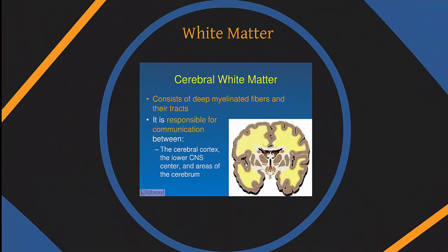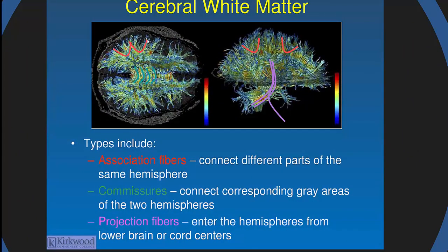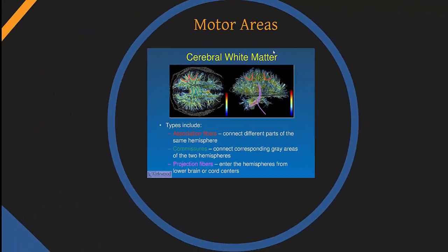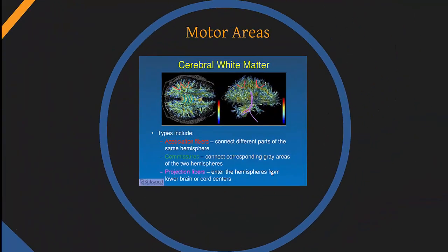Now for white matter. The telencephalon consists of cortex, white matter, and basal ganglia. White matter is axons projecting between brain areas. There are three types: association fibers (cortex to cortex, same side — short range); commissures (cortex to cortex, opposite side — like the corpus callosum); and projection fibers (cortex down to cerebellum or spinal cord).